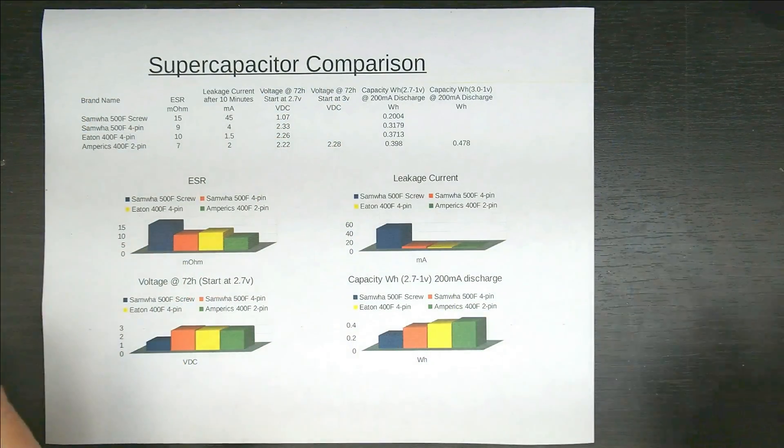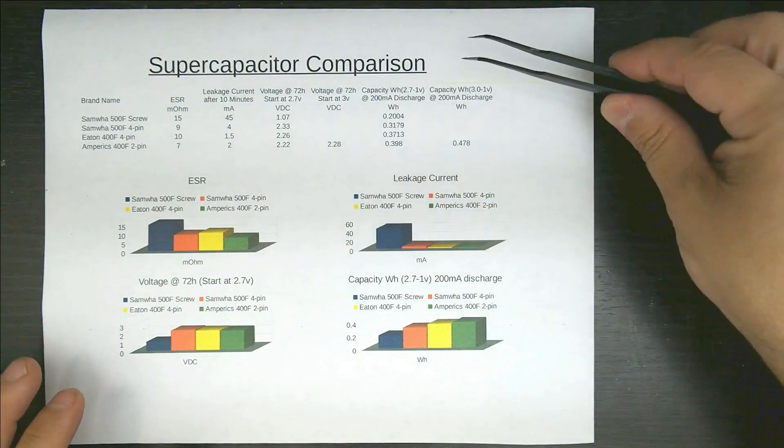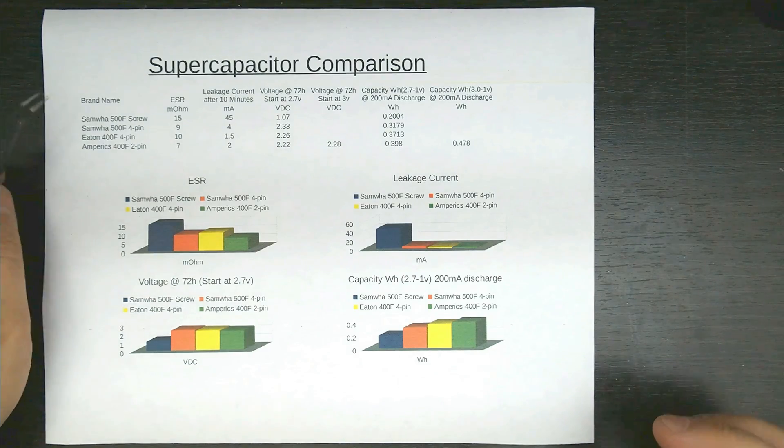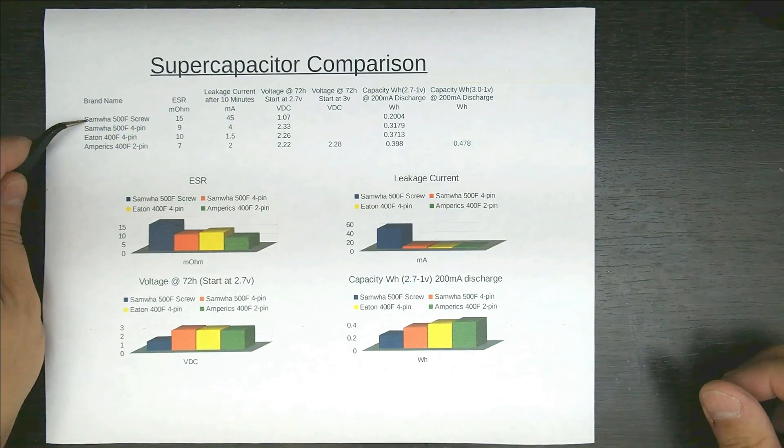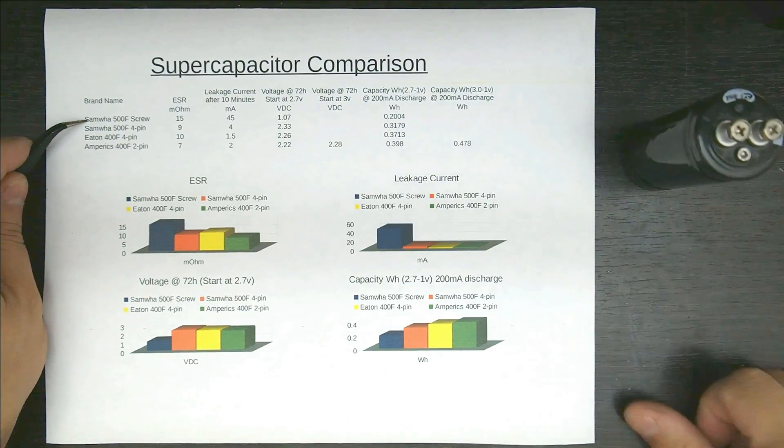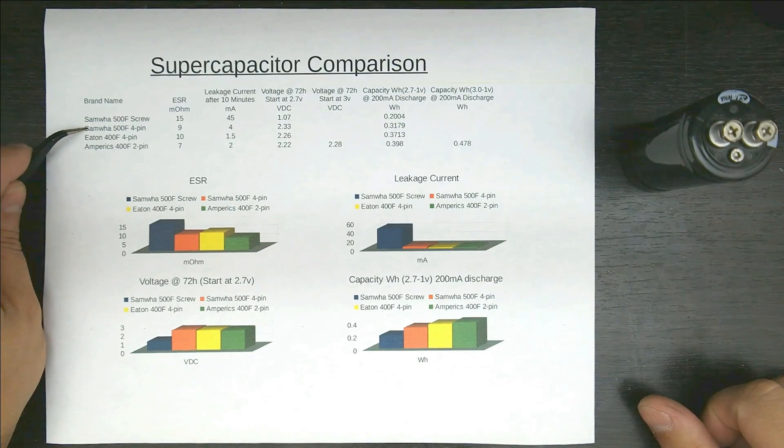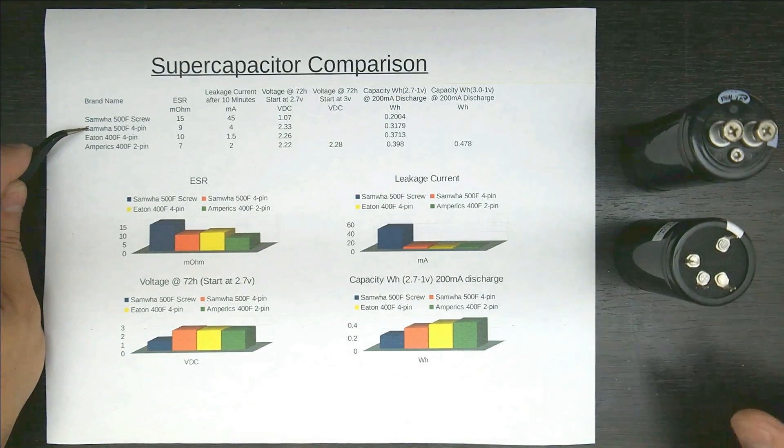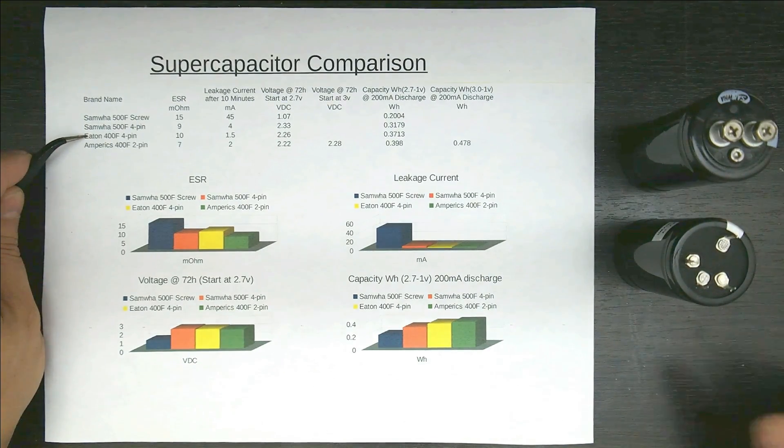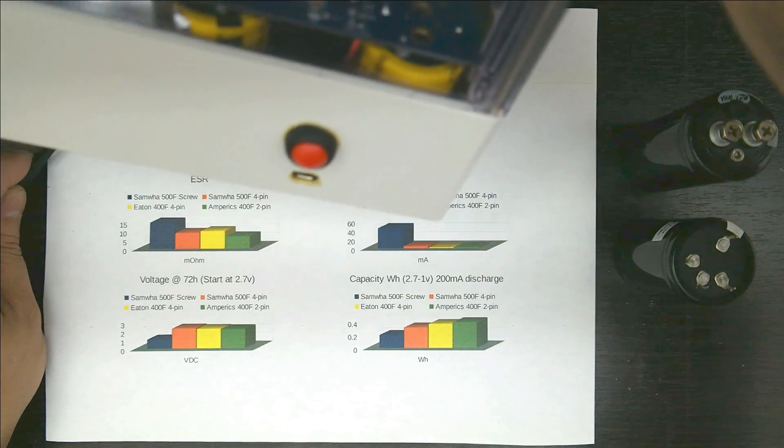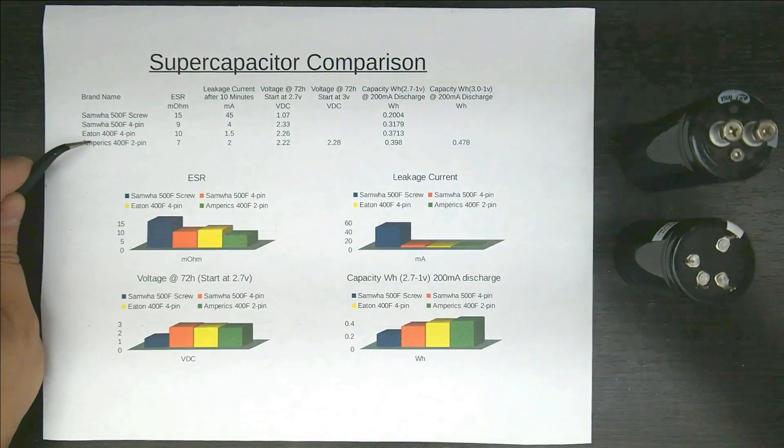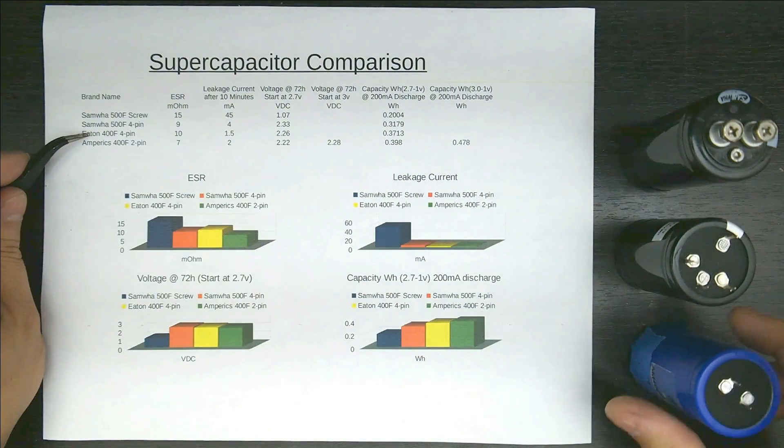Okay, here's my nice pretty little spreadsheet I printed out for you. Super capacitor comparison. Over here we have the first, the Samwa 500 Farad screw model, the Samwa 500 Farad 4-pin model, the Eton, those are the yellow ones that are in this big giant box, and newcomer Amperics.